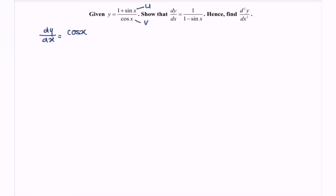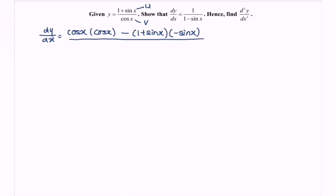We need to differentiate the numerator, 1 + sin x. Differentiating 1 gives 0, and differentiating sin x gives cos x. Then we subtract u, which is (1 + sin x), multiplied by v prime. Differentiating v = cos x gives negative sin x. The denominator is v squared, which is cos squared x.